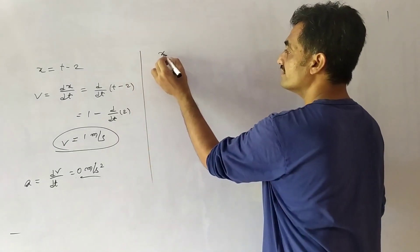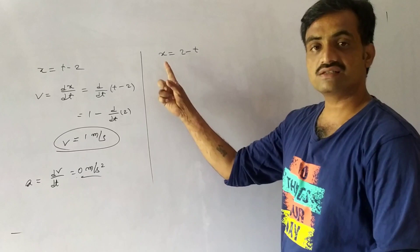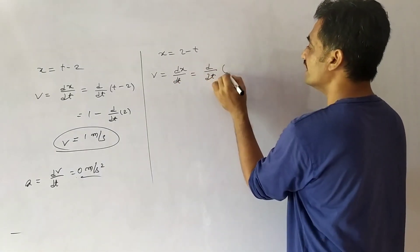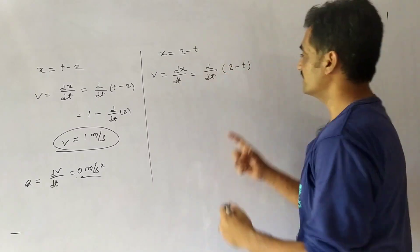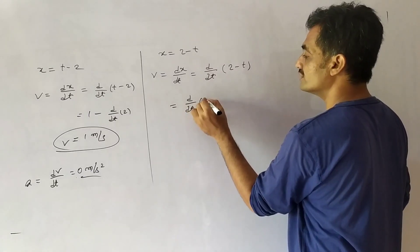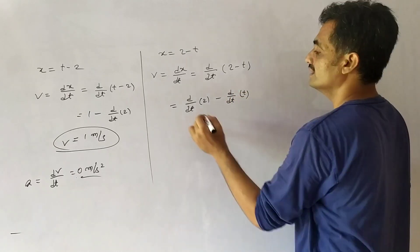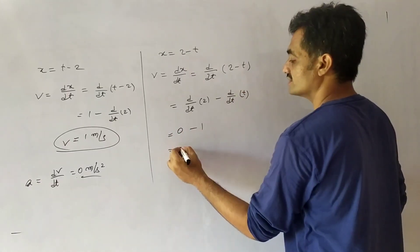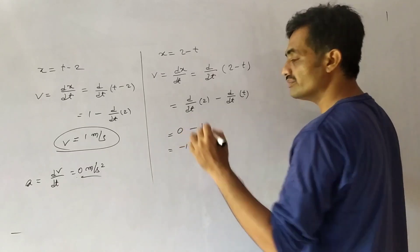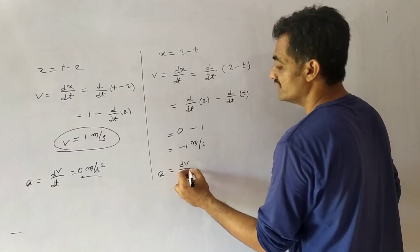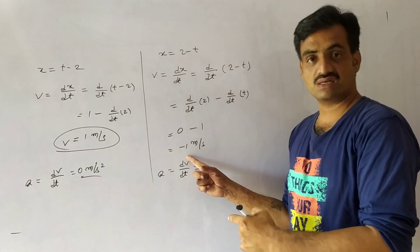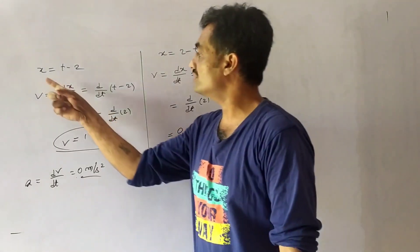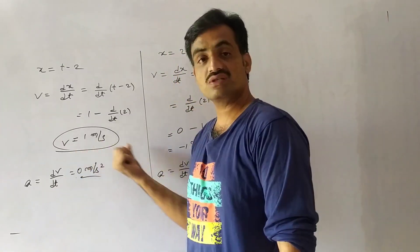Suppose the equation is x = 2 − t. Then velocity v = dx/dt = d/dt(2 − t) = 0 − 1 = −1 meter per second. The acceleration is a = dv/dt = 0, because −1 is a constant. So when a body moves along the straight line with this equation, acceleration is zero and it moves with constant velocity.